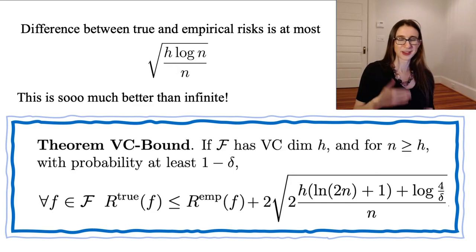and we're using that to bound the difference between true and empirical risks, even not knowing anything about the distribution that the data are drawn from. So that's why this theorem is so crazily elegant.